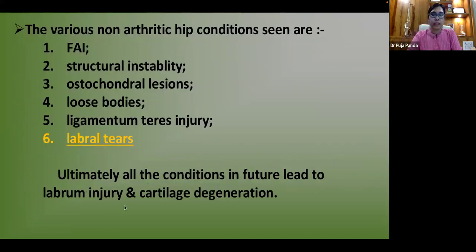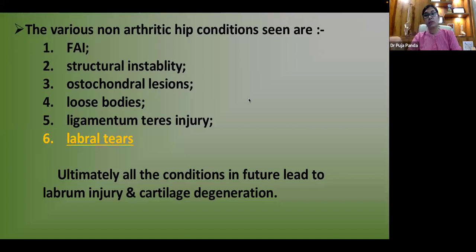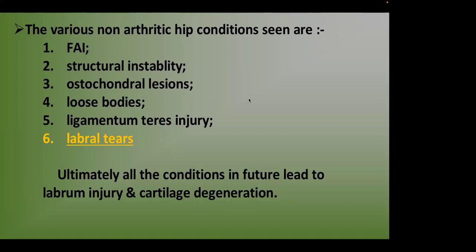The various non-arthritic hip conditions listed by CPG APTA 2014 include FAI, structural instability, osteochondral lesions, loose bodies, ligamentum teres injury, and labral tears. All these conditions, when chronic, can ultimately lead to labral tears — FAI in particular is one of the most important causes of labral tears in the long run.